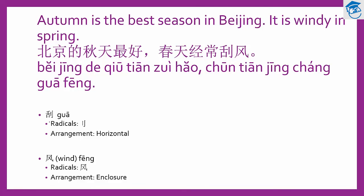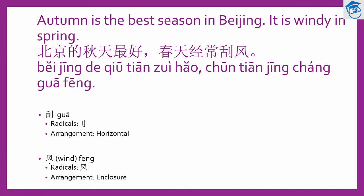The next word is 刮. It has many different meanings in different contexts. This is the pinyin 刮, and the radical is on the right. The arrangement is horizontal, with left and right components. Let's look at how to write 刮: eight strokes for this word. And 风 is a noun meaning wind: four strokes for this word.